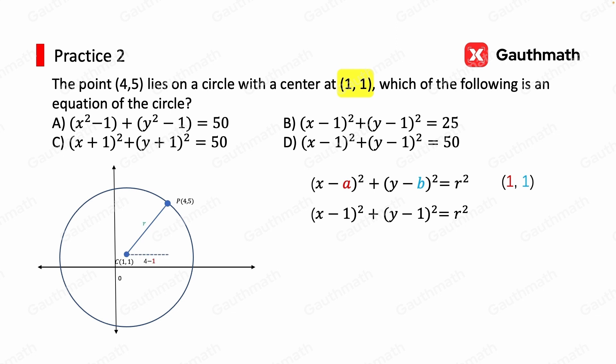And the horizontal distance is 4 minus 1, which is 3. And the vertical distance is 5 minus 1, which is 4. And thus the hypotenuse must be 5 because 3 squared plus 4 squared equals 5 squared.